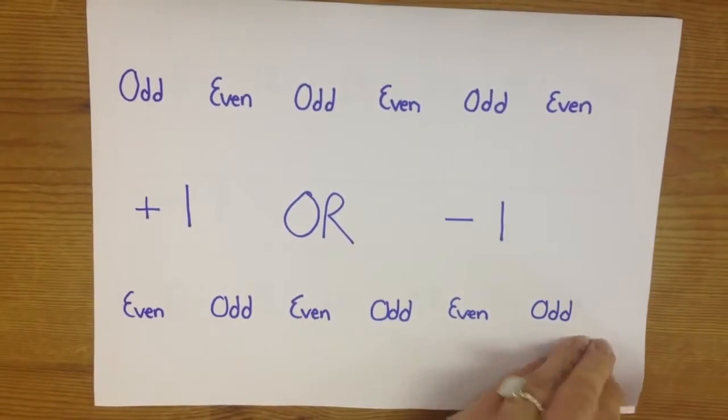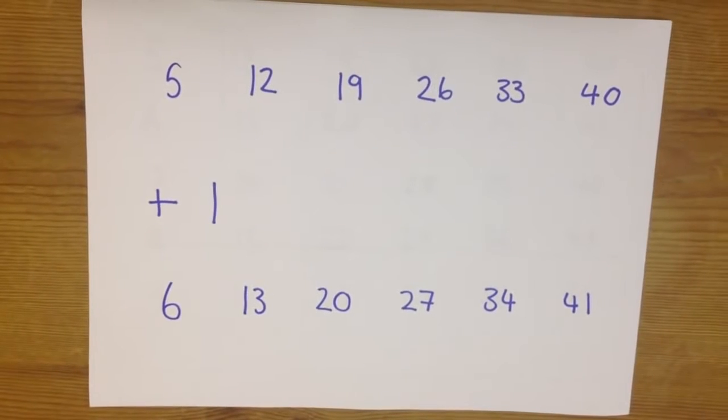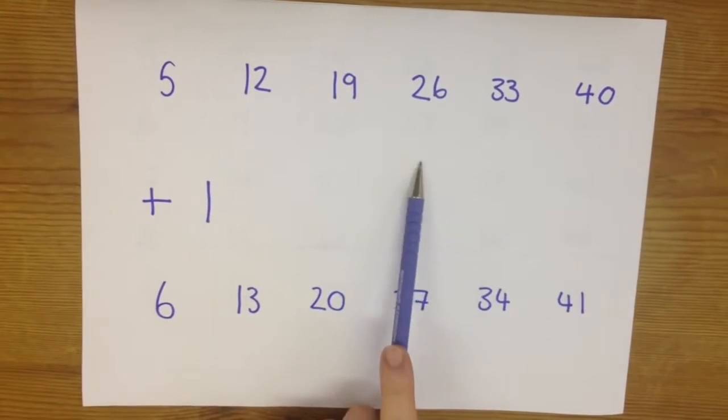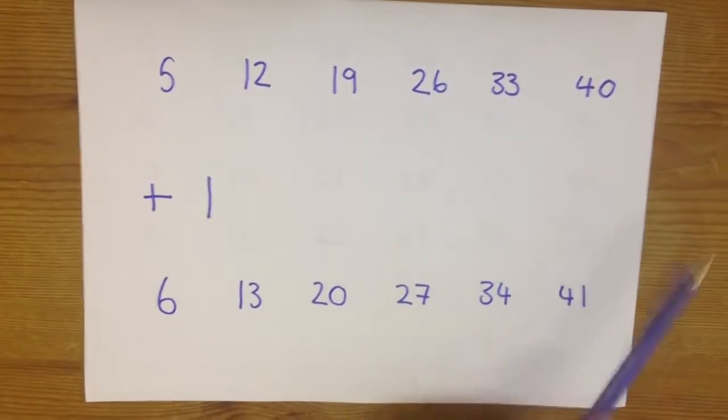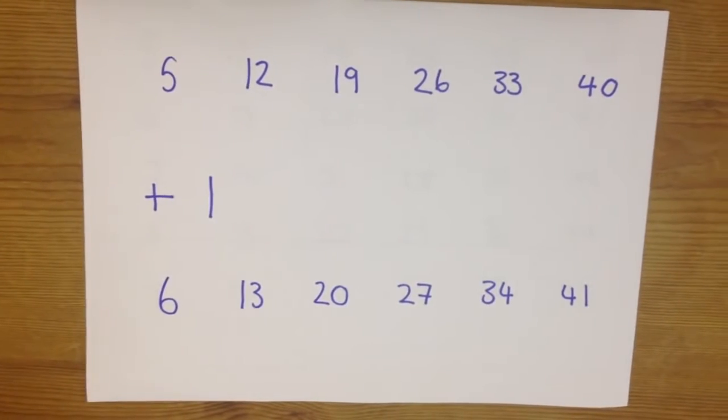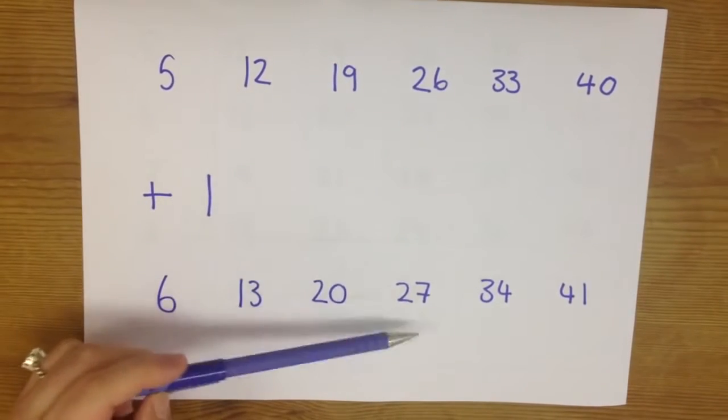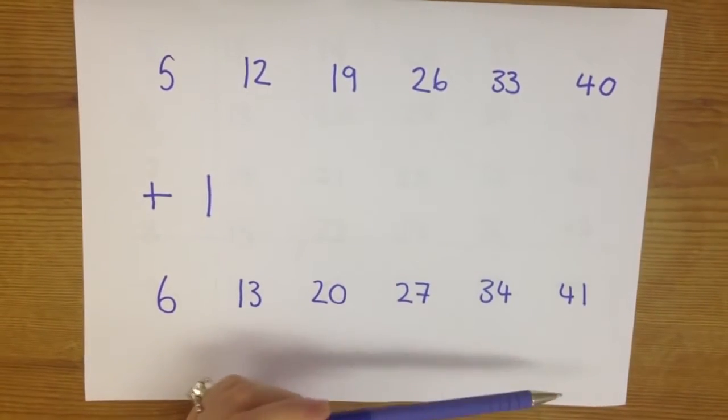So here goes, first line. We've chosen totally at random the numbers 5, 12, 19, 26, 33 and 40. We've just plus 1 onto that to give us 6, 13, 20, 27, 34 and 41.